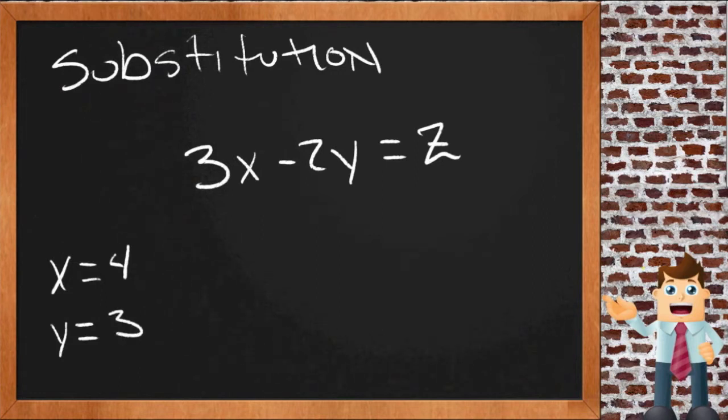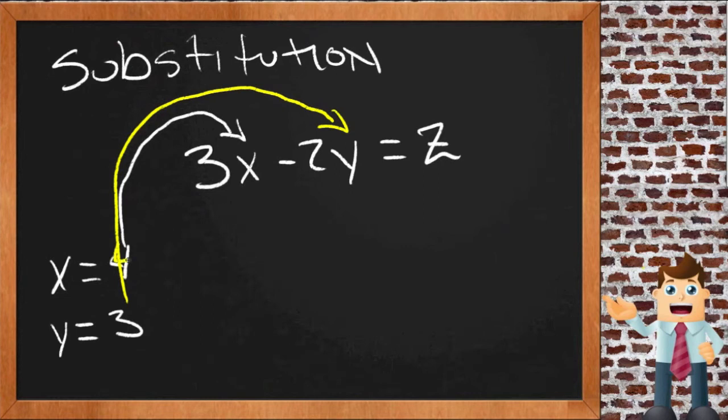So all you need to do is take those numbers that you're given for those variables and substitute them in place of those variables in the original statement. Let me change colors to make this a little easier to see here. So since we know that x represents 4, I shouldn't have written over my 4, huh? And y represents 3.